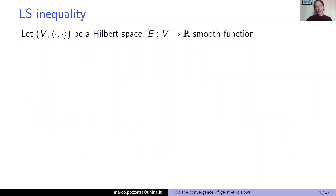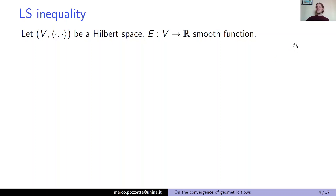In what follows, V will always be a Hilbert space, and we will consider a smooth function E, to be thought of as an energy defined on V. By smooth, we mean that you can take as many derivatives of E as you like, so we don't really care about the specific regularity at the moment. So we have an energy defined on a Hilbert space.